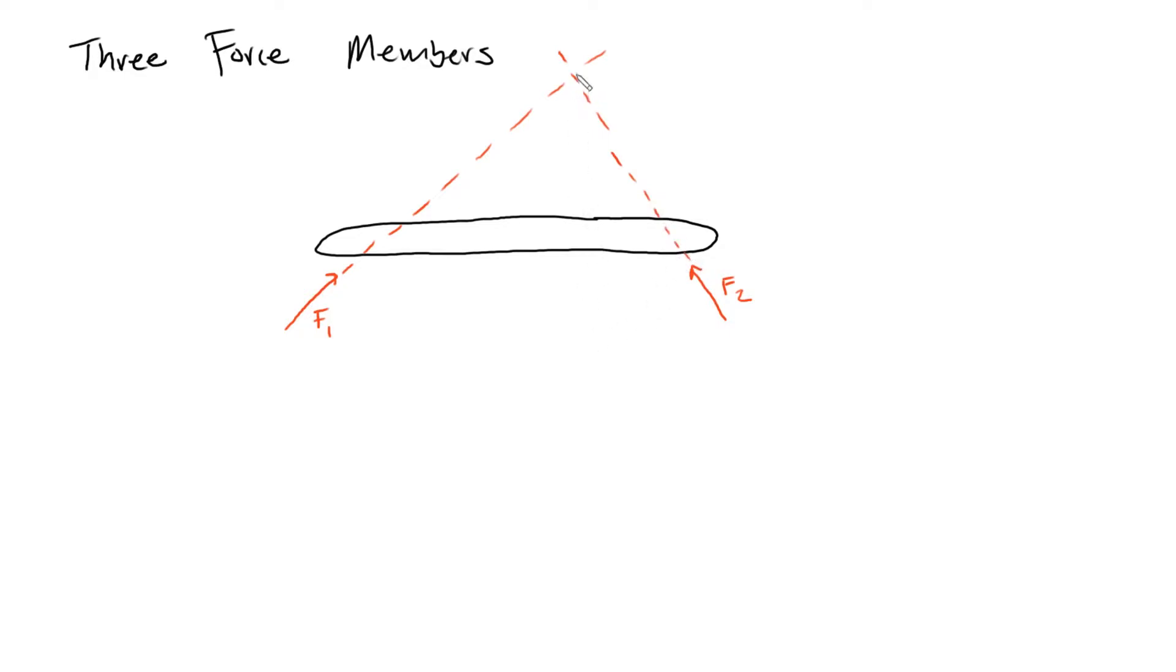So what we can do, there's some point arbitrarily over here, we'll call that point A. And if we take a moment about point A, it would actually be zero. So what that means is, this bar, although it's not in equilibrium, there's actually no tendency for this object to rotate.